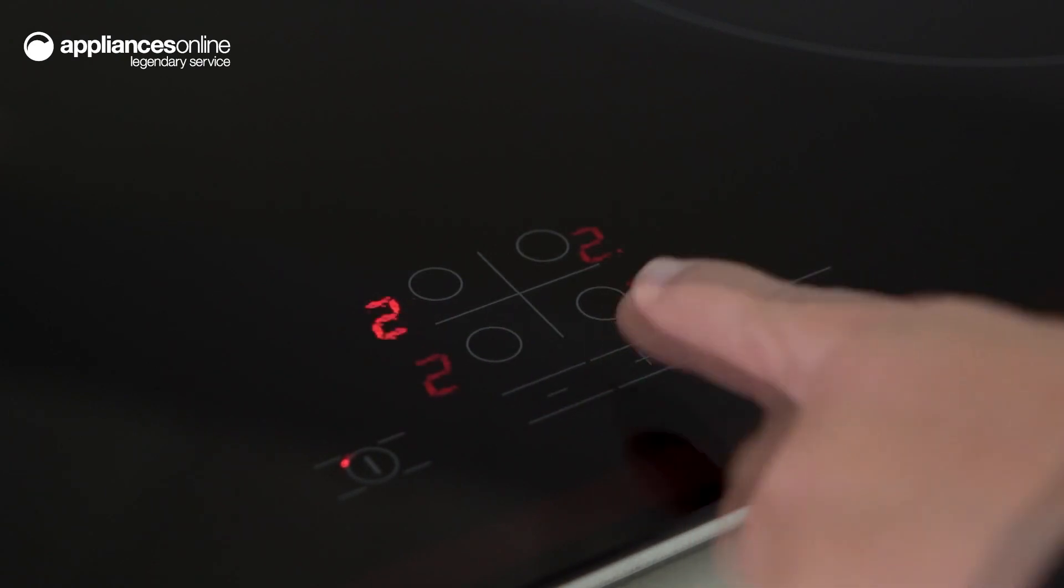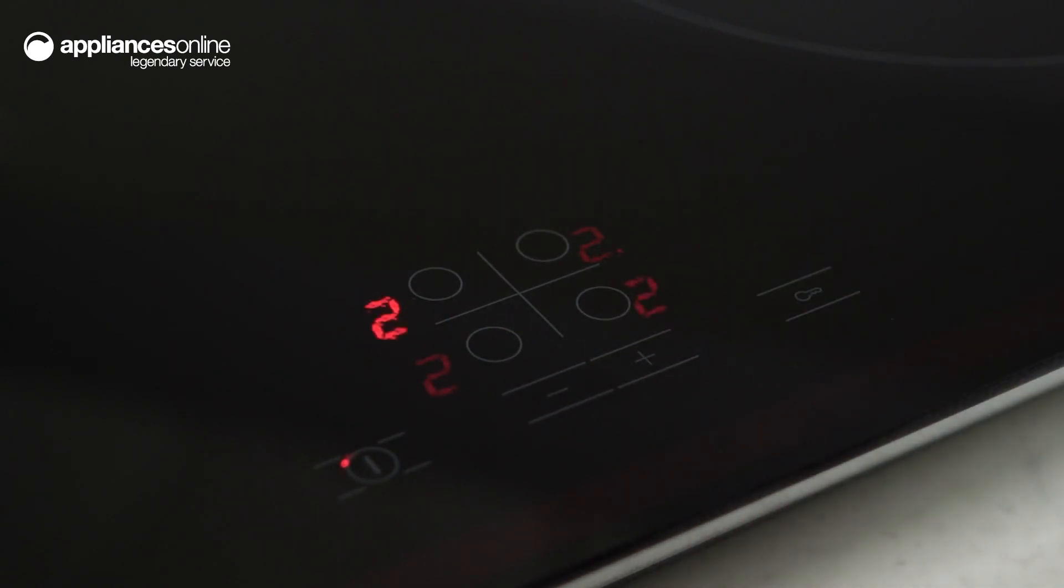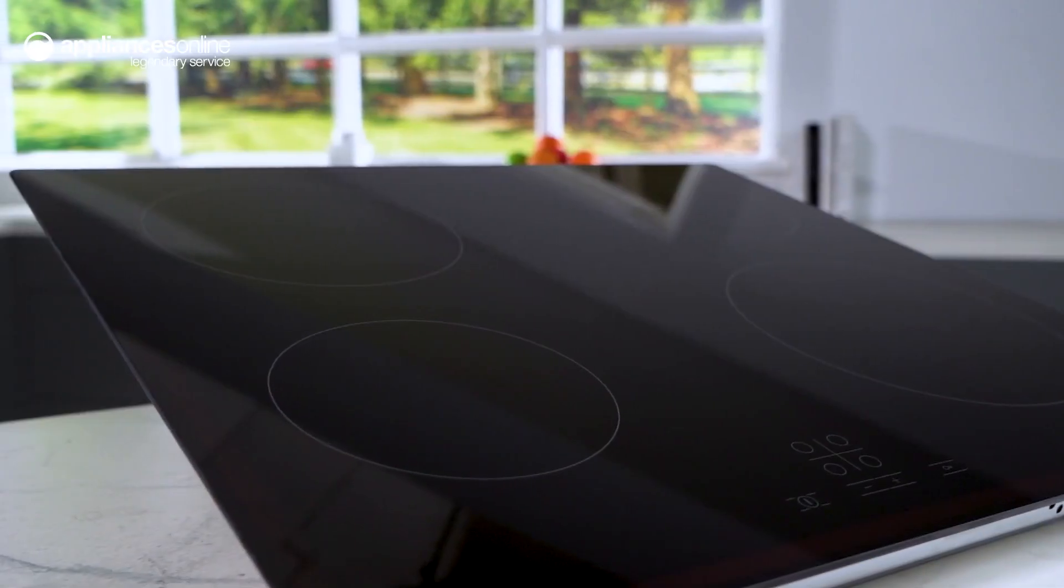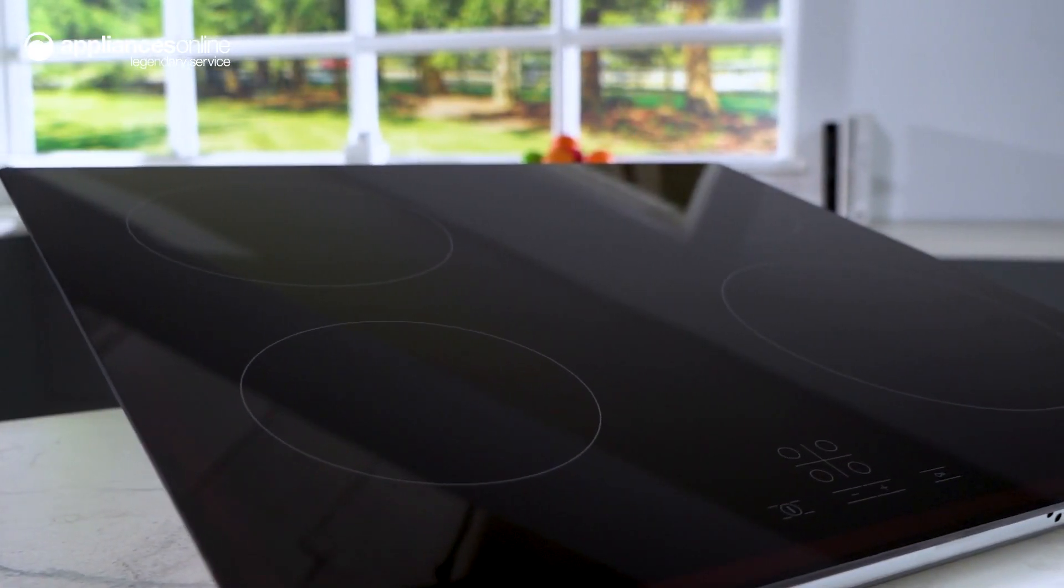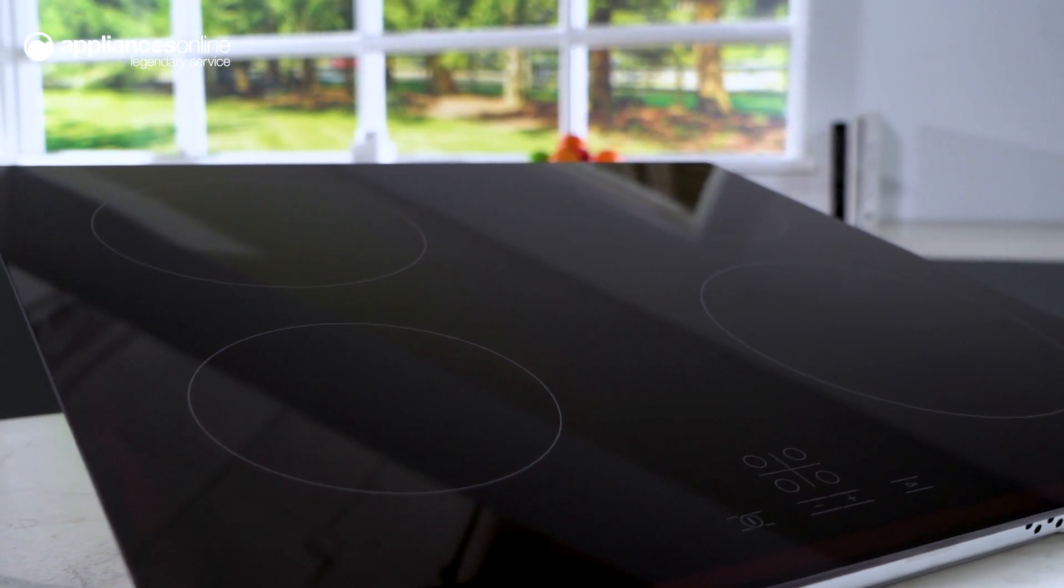And for added safety, a child lock prevents accidental interference with the controls, while residual heat indicators let you know if the cooktop is still hot to the touch.